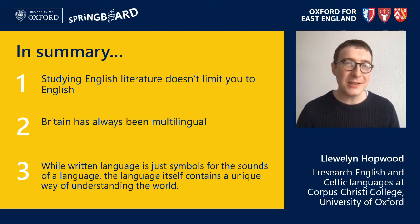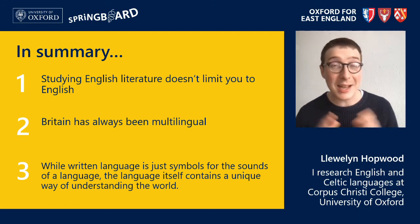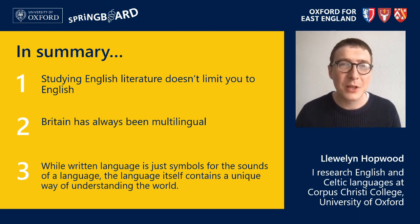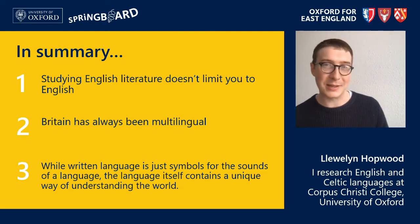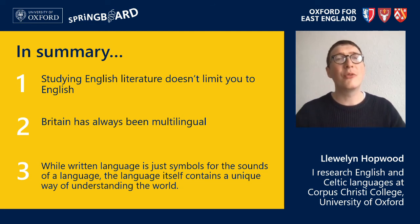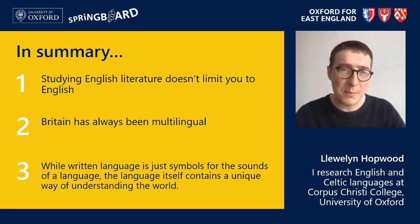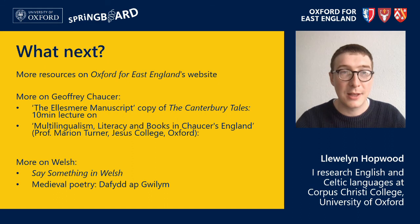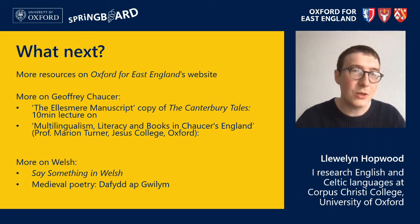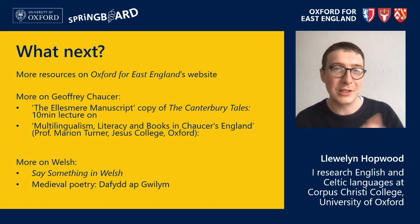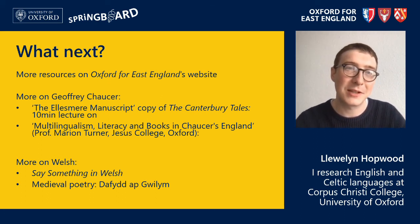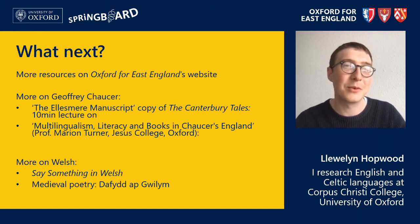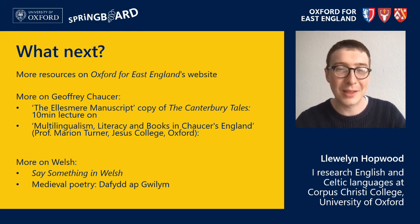In summary, we have seen today that studying English literature does not by any means limit you to studying English. We've learned that Britain has always been multilingual. And lastly, we've realised that written language is just symbols for the sound of that language — however, the language itself contains a unique way of understanding the world. If you'd like to learn more about Chaucer, Welsh, or medieval languages, you can look at these resources, including the Oxford for East England website. I particularly recommend looking at the Ellesmere manuscript copy of the Canterbury Tales — that is a work of art. I hope you've enjoyed. Thank you very much.